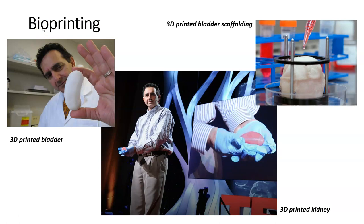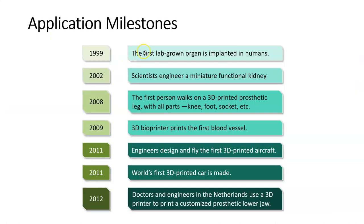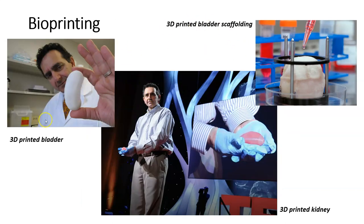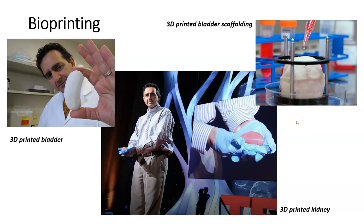Focusing on bioprinting: the first four application milestones all involve bioprinting. We have the first 3D printed bladder and this 3D printed kidney. The scaffolding is necessary because the 3D printed cells need a structure to assume a three-dimensional shape. The 3D printing involves the deposition or layering of cells, and the scaffolding allows those cells to take on the three-dimensional form.